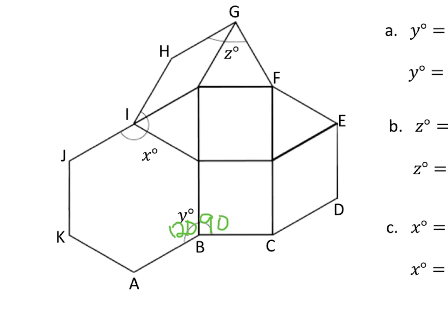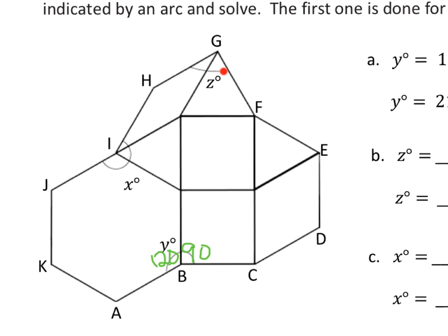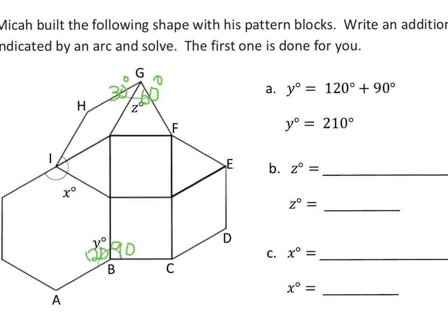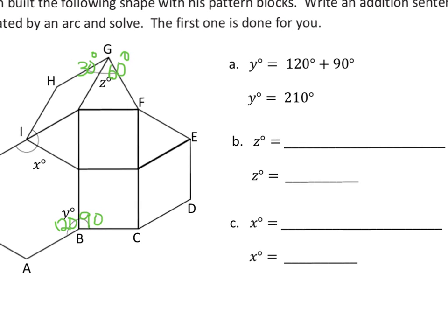Now we're supposed to do Z. Z is way up here. We can see that this portion of the arc is the acute angle of a triangle, so that's 60 degrees. And then this little piece of the beige — from previous experience — that's 30 degrees. So for Z, we would write 30 degrees plus 60 degrees, and that is equal to 90 degrees. Pretty simple math, really.